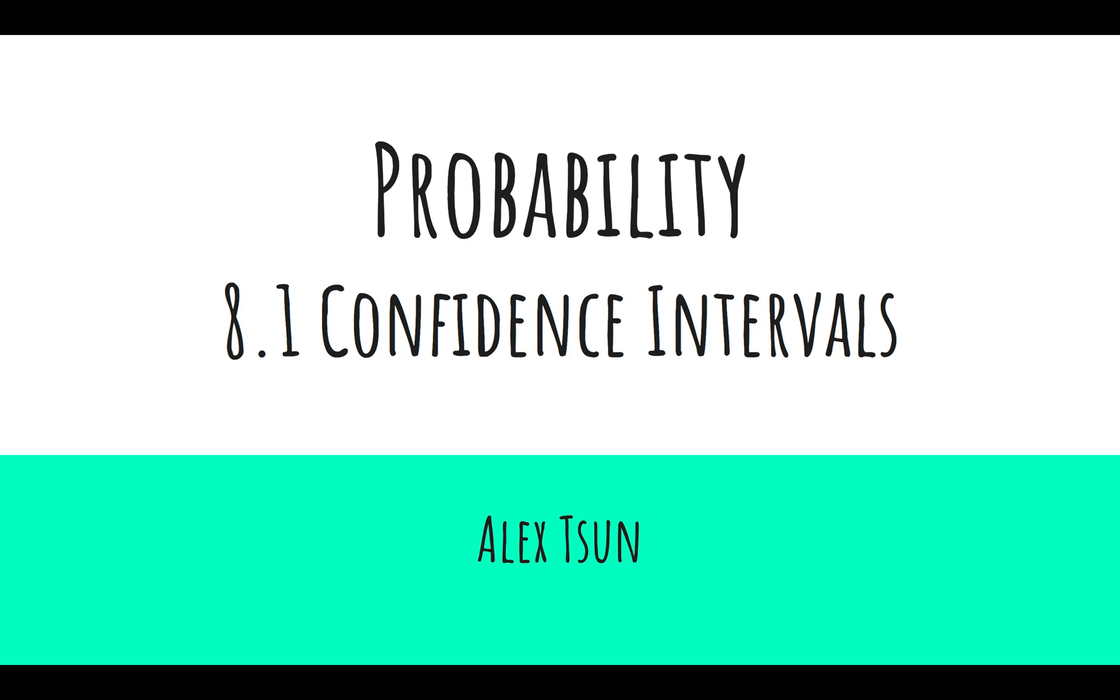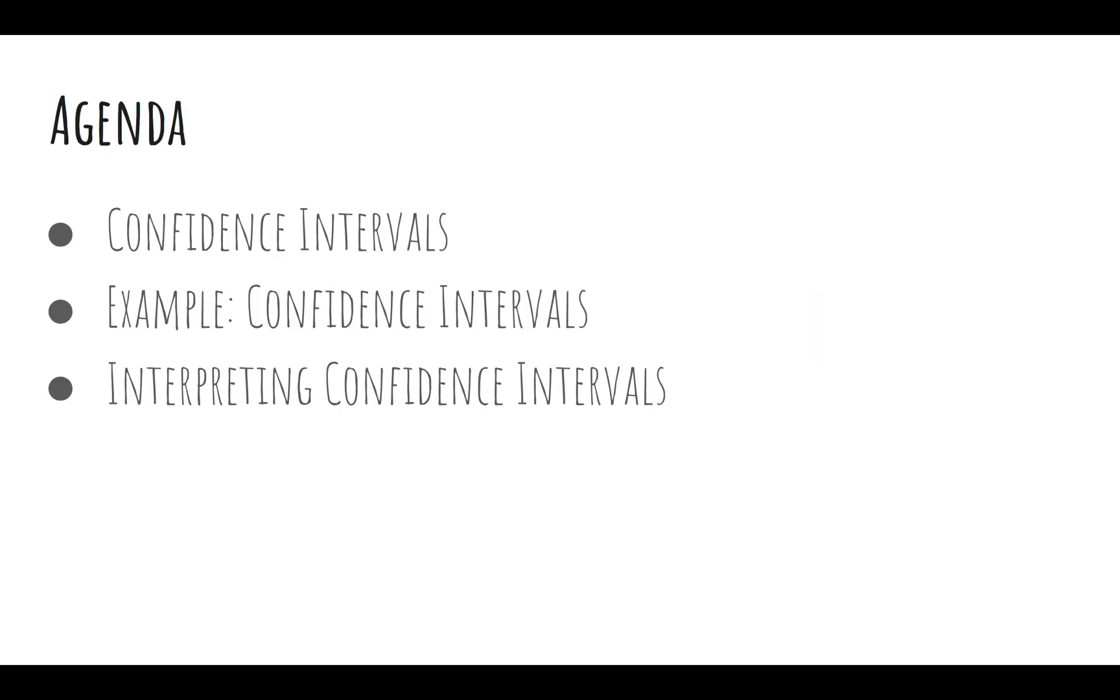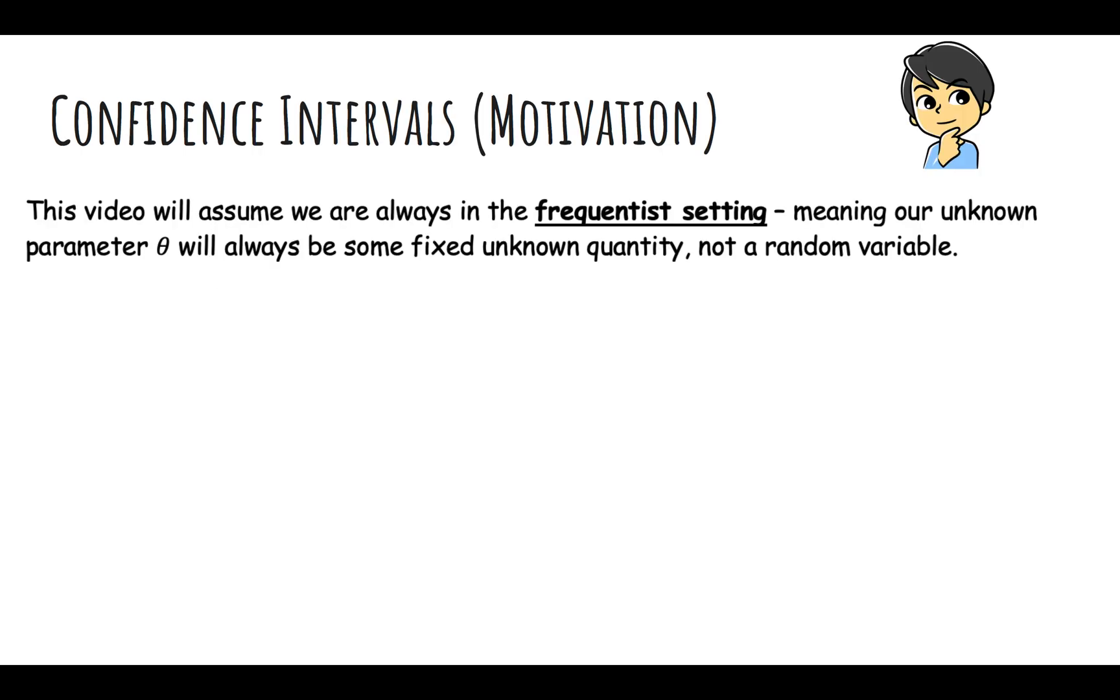In this video, we'll talk about confidence intervals, then do a few examples, and then interpret them. This video will always assume we're in the frequentist setting, meaning our unknown parameter theta will be some fixed unknown quantity and not a random variable, so this could be maximum likelihood or method of moments.